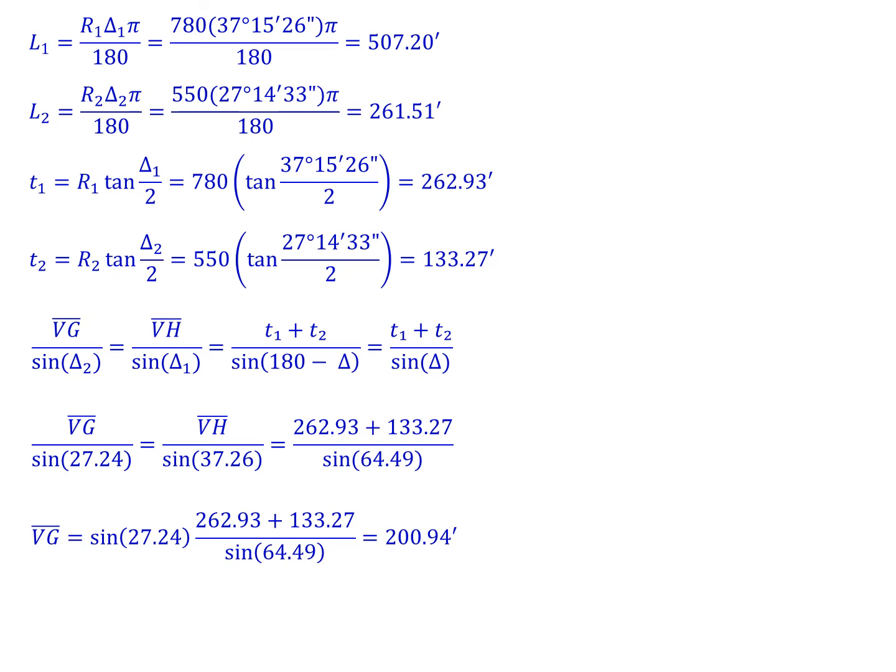We're going to solve each of these individually. The distance VG equals sine of 27.24 multiplied by 262.93 plus 133.27 divided by the sine of 64.49. That gives us a distance of 200.94 feet.